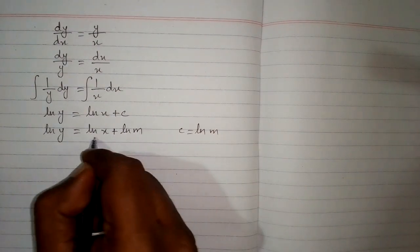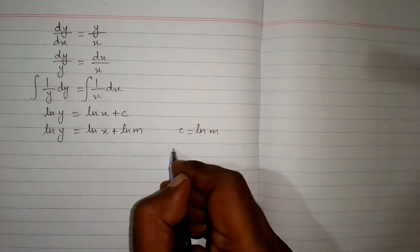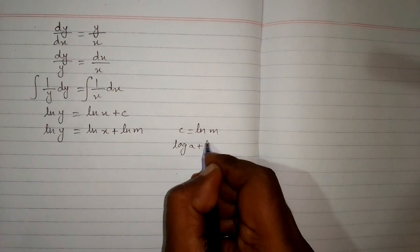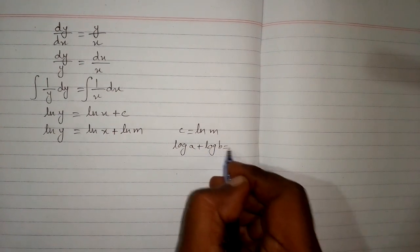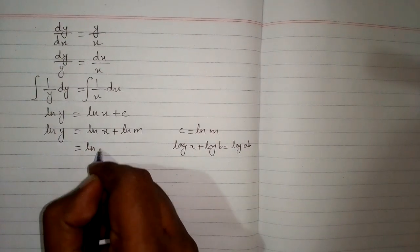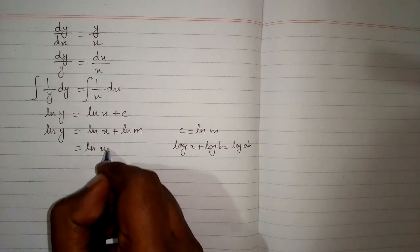Now we can apply the rule of logarithm which is log of a plus log of b is equal to log of ab. So this will become ln of xm.